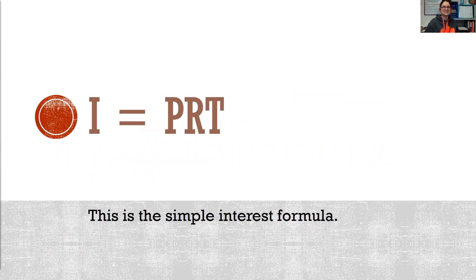Our formula is I equals PRT, where multiplication is between each of our variables, the P, the R, and the T.